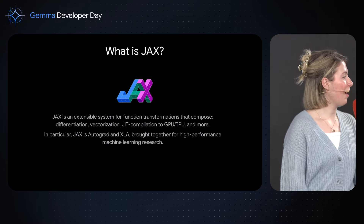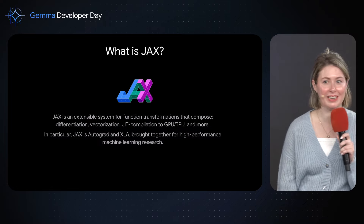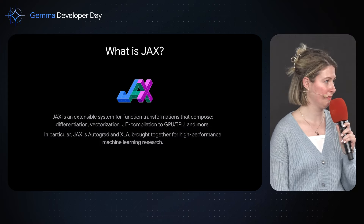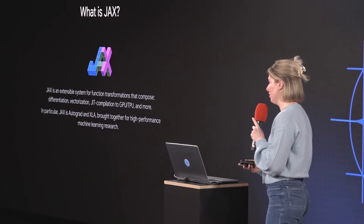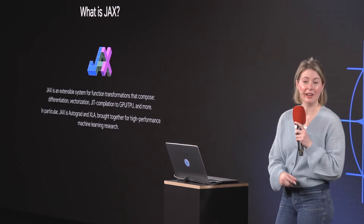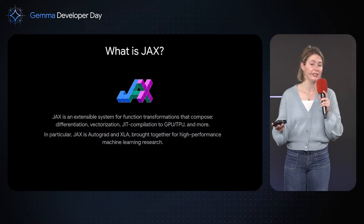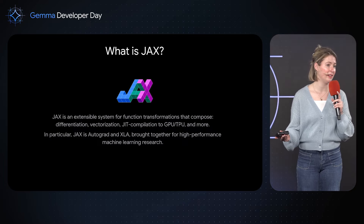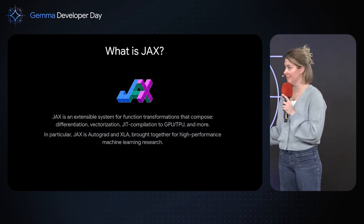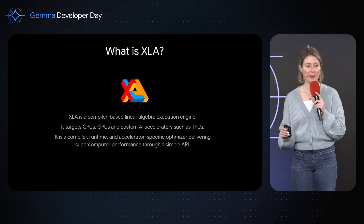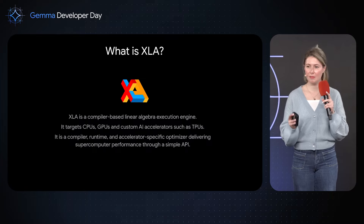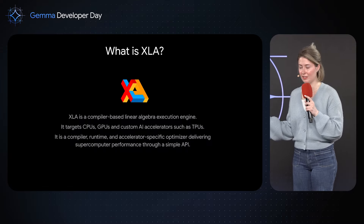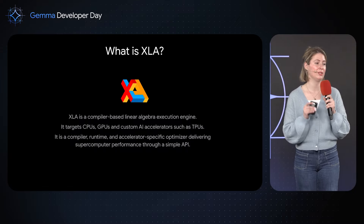At a high level, JAX is a framework for writing function transformations — specifically, composable function transformations — which enables us to do very complex operations like differentiation and vectorization. More specifically, JAX is a combination of Autograd, an automatic differentiation library, and XLA, a compilation engine that targets high-performance code on CPUs, GPUs, and TPUs. In a nutshell, JAX enables ML research on as efficient code as we can possibly get.